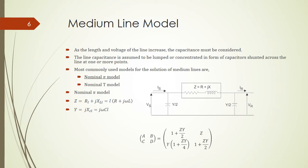In this case, ABCD model is given like this: 1 plus ZY over 2, Z, Y times 1 plus ZY over 4, 1 plus ZY over 2.